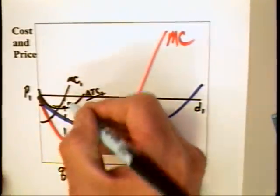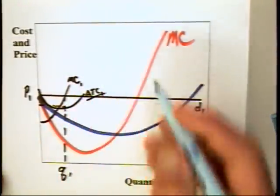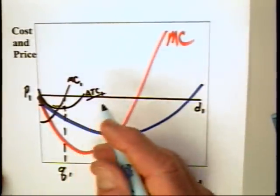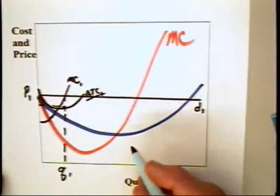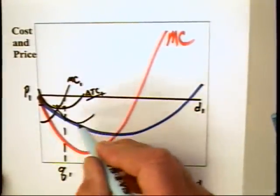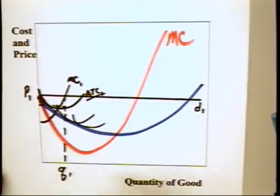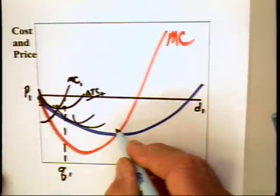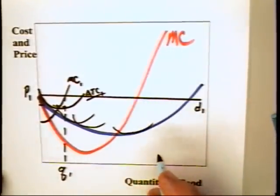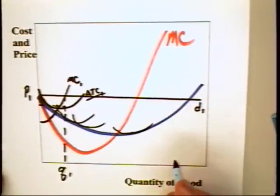But this is when the firm is only on one scale of operation. When it is thinking about the long run, it can vary its scale of operation and, as we said, can achieve economies of scale. Indeed, it might want to move over to where there are diseconomies of scale.